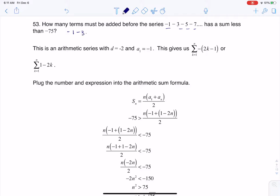So you would have negative 1 minus 3 minus 5 minus 7 minus 9 minus 11, and you could keep on going until that sum was less than negative 75 and just counted up the number of terms. But let's try to do it with the formulas.